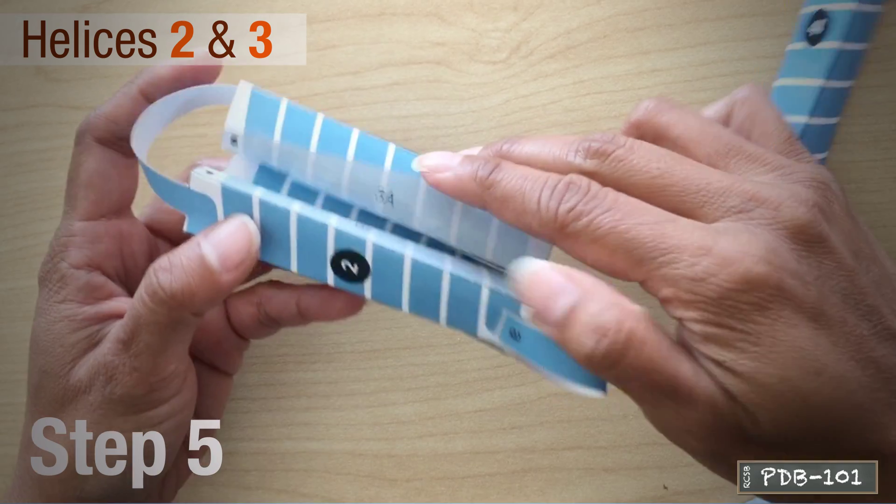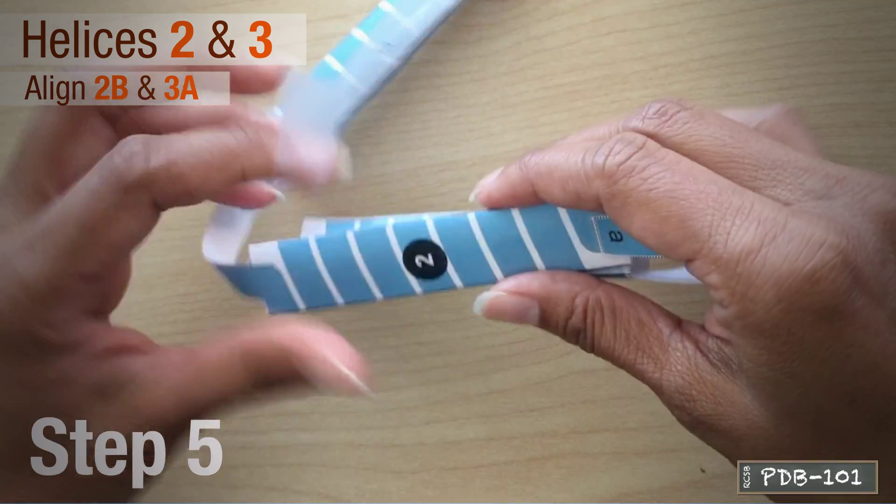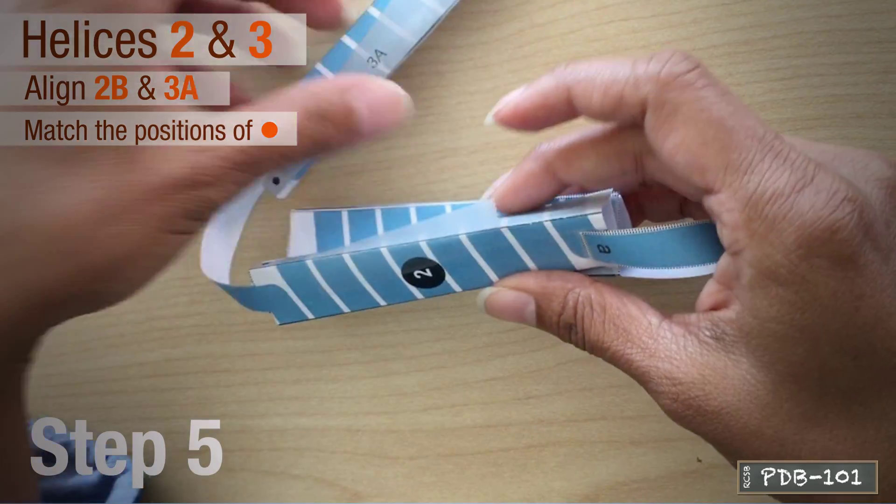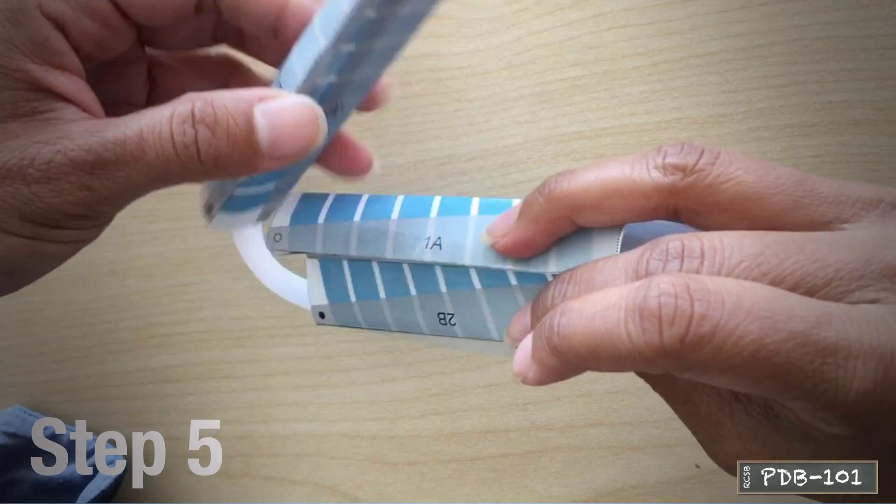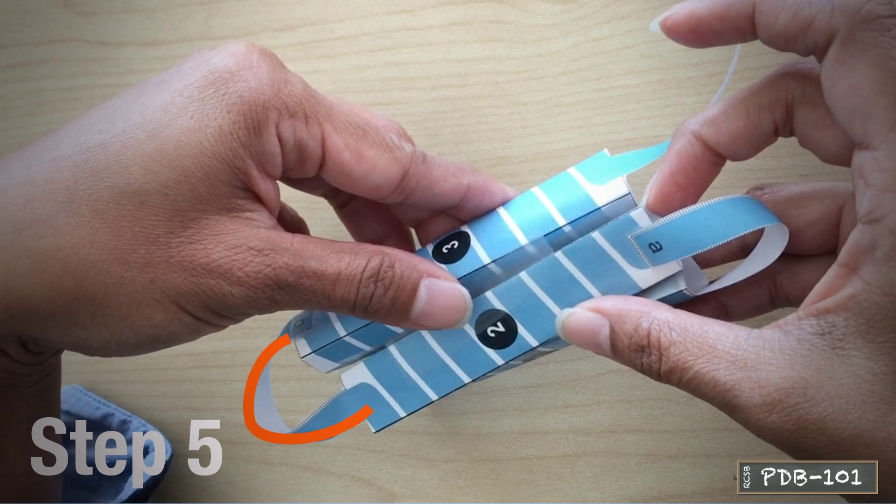Connect helices 2 and 3 by aligning the areas 2B and 3A, matching the position of the circles. Now you will notice the first extracellular loop forming.